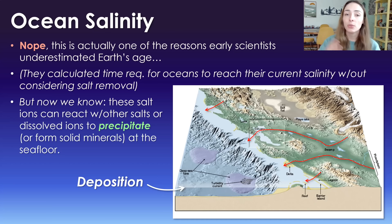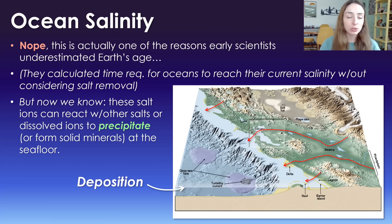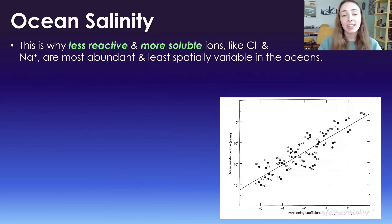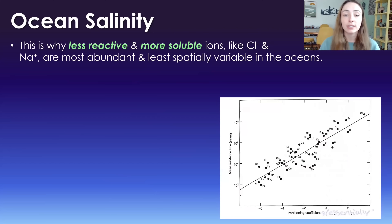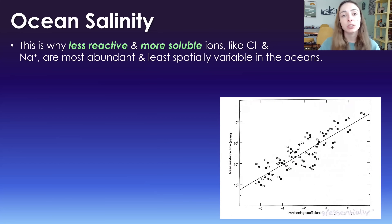We now know that salts are largely removed from the ocean through precipitation of salt-containing minerals, which leads to their trapping in the geosphere — in rocks. They go through a cycle, like anything else we've been talking about in biogeochemical cycles. It's not just a unidirectional process. This is why less reactive and more soluble ions like sodium and chlorine are most abundant in the ocean and least spatially variable.